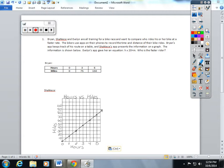Brian, Janice, and Evelyn are all training for a bike race and want to compare who rides his or her bike at a faster rate. The bikers use apps on their phones to record the time and distance of their bike rides. Brian's app keeps track of his route on a table, and Janice's app presents the information on a graph. The information is shown below. Evelyn's app gave her an equation: H times 20 equals miles. Who is the faster rider?